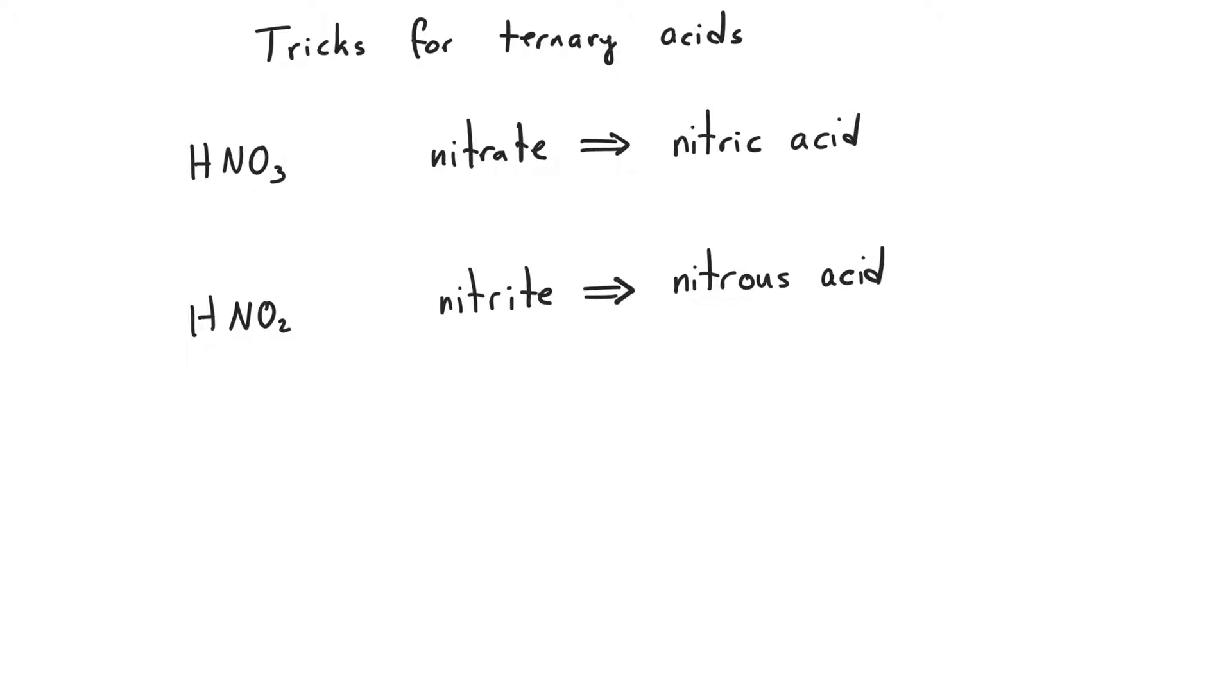There are a couple of tricks for naming ternary acids. The first one is to notice that with HNO3, we have the nitrate ion. That's going to become nitric acid.